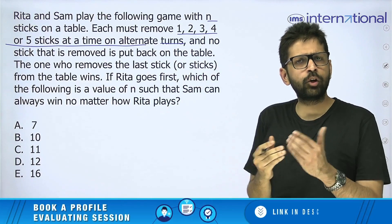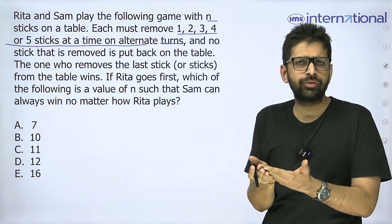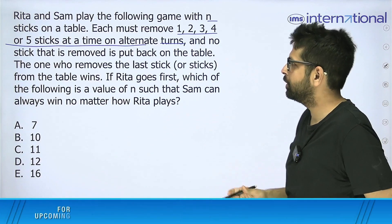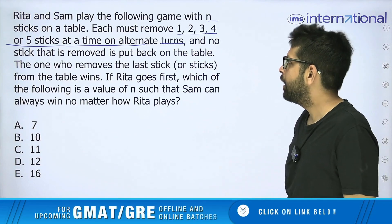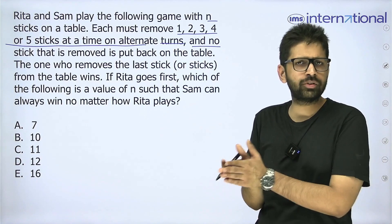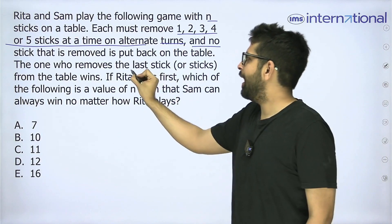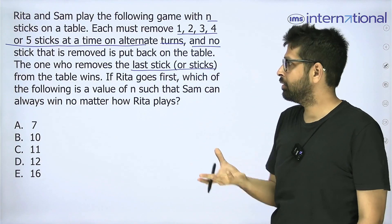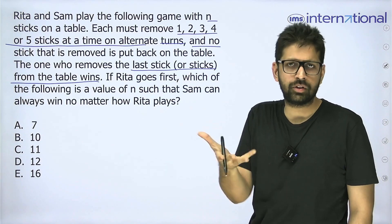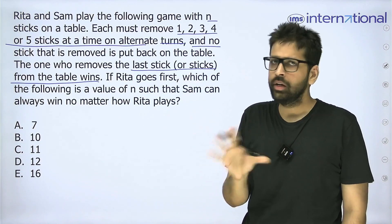This is a game where to-and-fro interactions happen: first one player picks some sticks, then the other, and so on — alternate transactions between R and S. No stick that is removed is put back on the table. Once you have removed a stick, you are not going to replace it. The one who removes the last stick or sticks from the table wins the game — whoever picks them last wins.